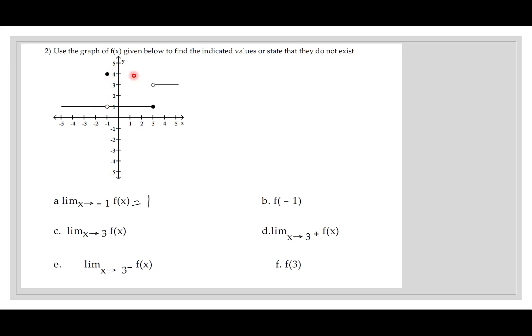The next question asks what is f of negative 1 — it was 4. That can happen; life doesn't always give exactly what we expect. Now let's look at the limit as x goes to 3 of f of x. Here's 3 — I look on the left, it looks like 1; I look on the right, it's 3. Since 1 and 3 are not equal, the limit as x goes to 3 does not exist, so we write DNE.